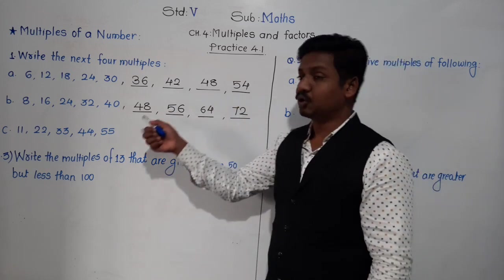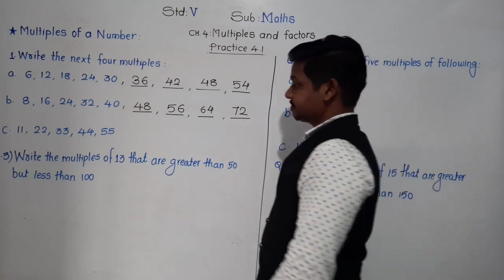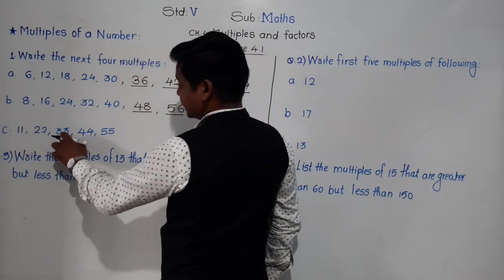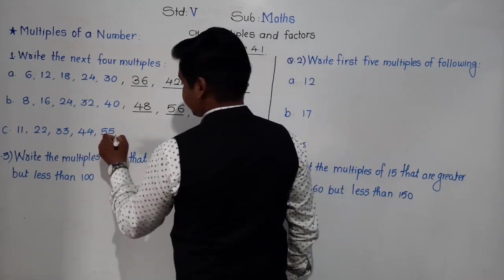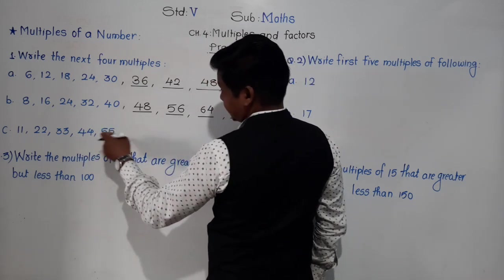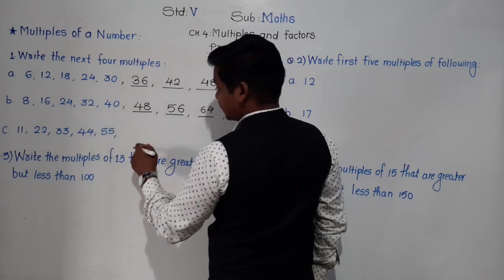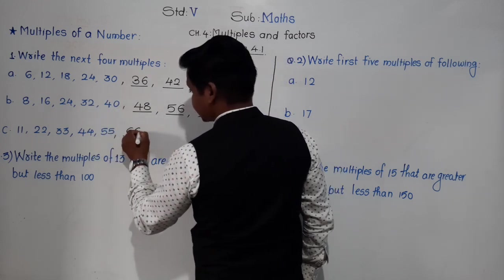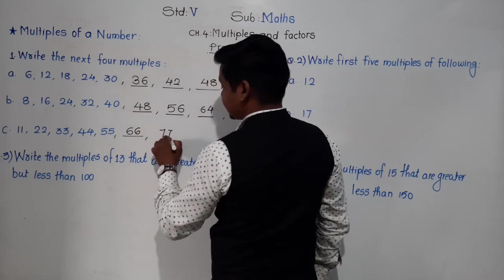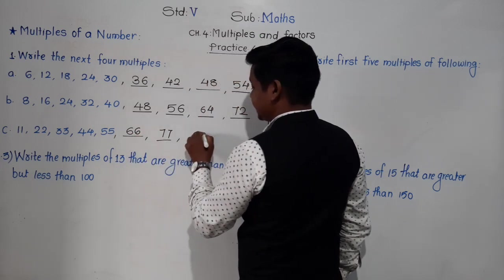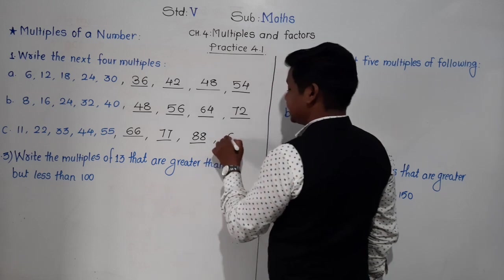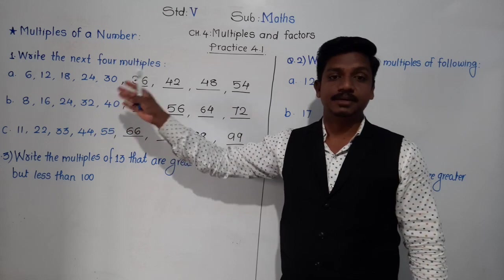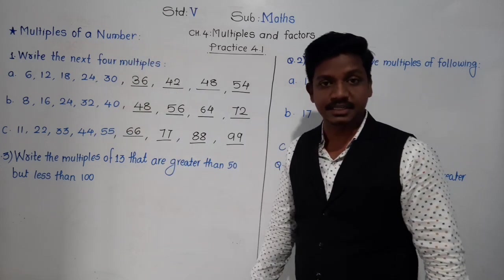For part C — the series for 11: 11, 22, 33, 44, 55. These are multiples of 11. The next 4 are: 11×6=66, 11×7=77, 11×8=88, and 11×9=99. This is where we find the next 4 multiples of the given series.